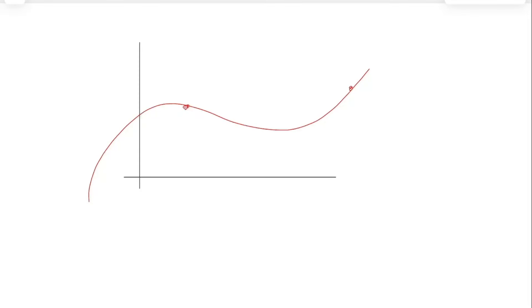Maybe it would be fun to talk about a fun fact. I don't know how many of you are aware of this. The arc length is all about measuring the length of a curve. If I give you a function like this, the arc length is about the actual length of the curvy bit along the curve. That's the arc length. There's a formula for that we're going to get into eventually, but before we get into the details, I'd mention a little fun fact.